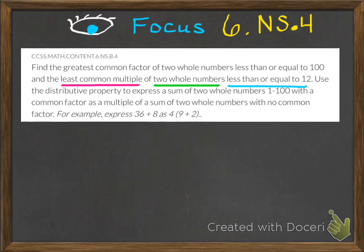If you're in my class, you've already written this standard down on the second page of your notebook, so you don't need to write the entire standard again. But in the top right corner, you do need to write 6.NS.4. We're going to ignore the first part because we've already talked about finding the greatest common factor of two whole numbers. We're going to skip right to the underlined parts: the least common multiple of two whole numbers less than or equal to 12. The last piece about the distributive property will not be the focus of this video.